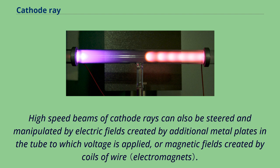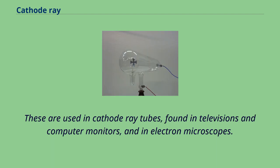High-speed beams of cathode rays can also be steered and manipulated by electric fields created by additional metal plates in the tube to which voltage is applied, or magnetic fields created by coils of wire. These are used in cathode ray tubes, found in televisions and computer monitors, and in electron microscopes.